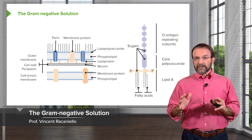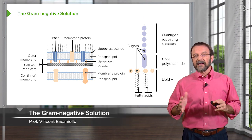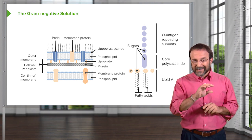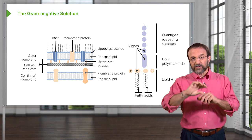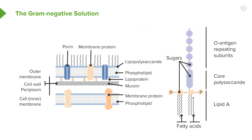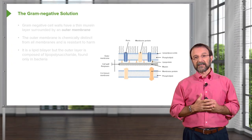The gram-negative solution is quite different, and this is an overview of how that works. We have a cell or inner membrane surrounding the cytosol of the bacteria. The goal is how do we protect that? The gram-positive solution was to put a thick murein layer on top. The gram-negative solution has a thin murein layer, and then a second membrane on top called the outer membrane. Let's explore its structure in some detail.